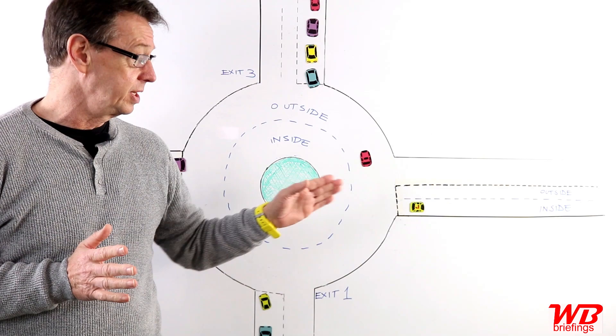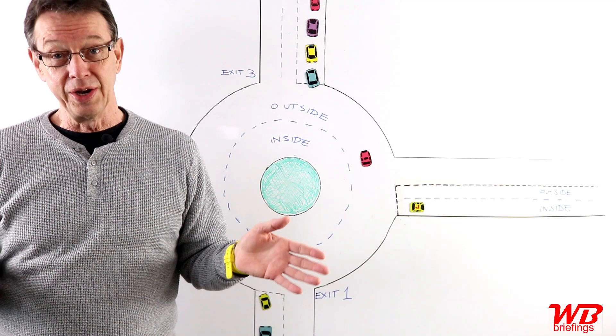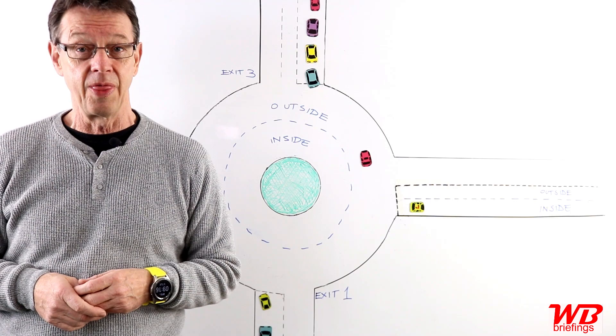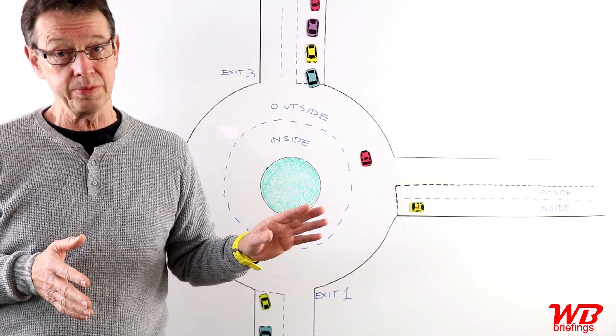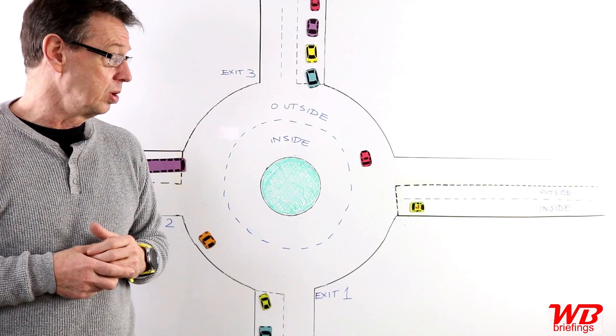This section is going to be about observation and planning, looking when to go, when not to go. There is another briefing on roundabouts which is to do with procedures. That means it's more about lane markings, which lane to be in, when to signal, when not to signal. This briefing here is more to do with observation and planning.